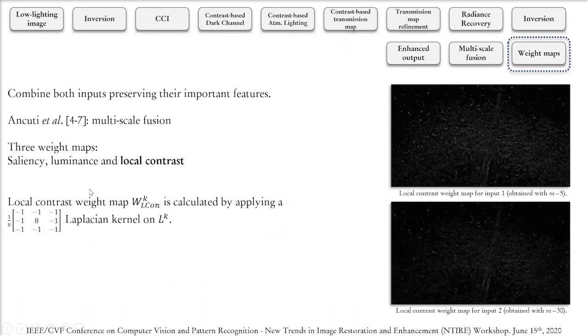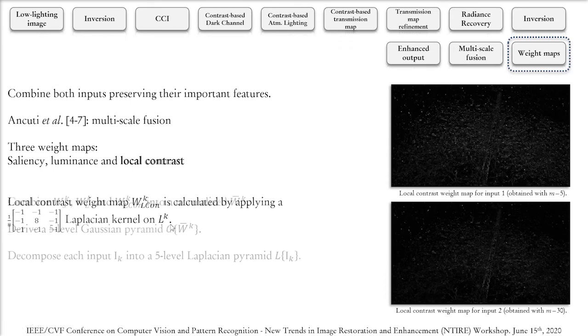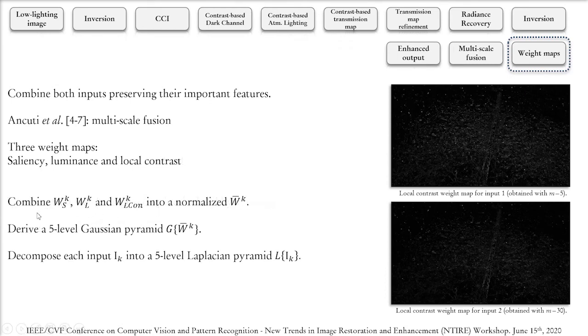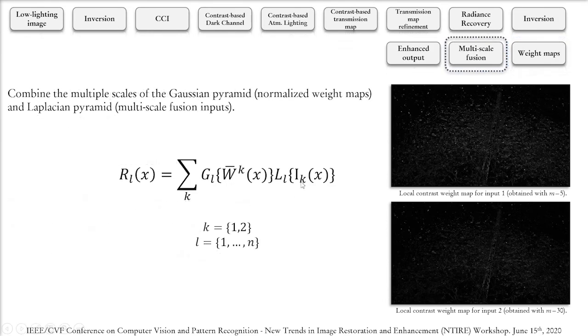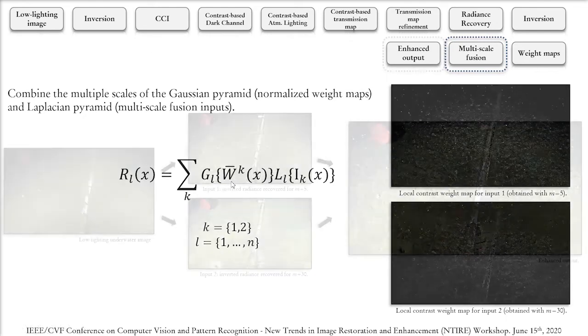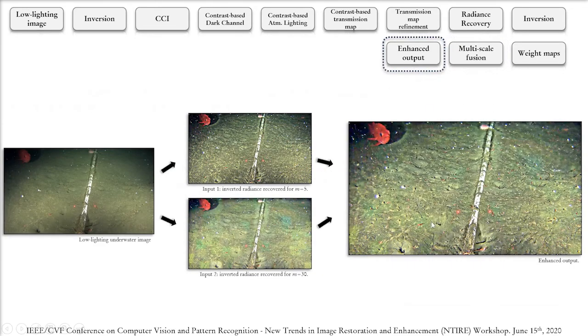Finally, the local contrast weight map can be calculated by applying this Laplacian kernel on the luminance image we just discussed. Following the methodology proposed by Ancuti et al., we combine the three weight maps into a normalized one and then derive a five-level Gaussian pyramid out of them. We then derive a five-level Laplacian pyramid out of the inputs and then combine them in a pixel-wise multiplication for the final result. As we can see here in the final result, we were able to keep the finer details from the atmospheric lighting model created with M equals 5, while at the same time maintaining the darkness removal capabilities of the model created with M equals 30.